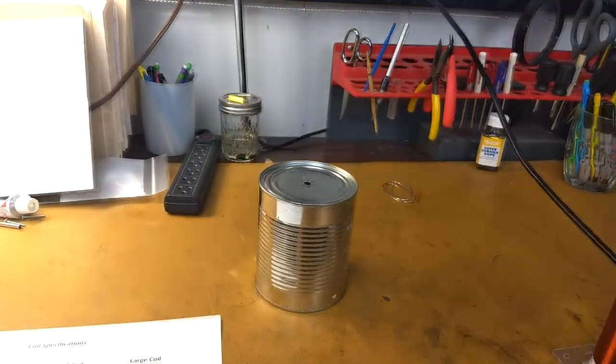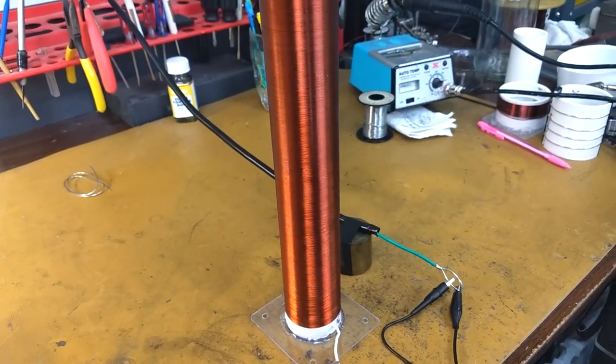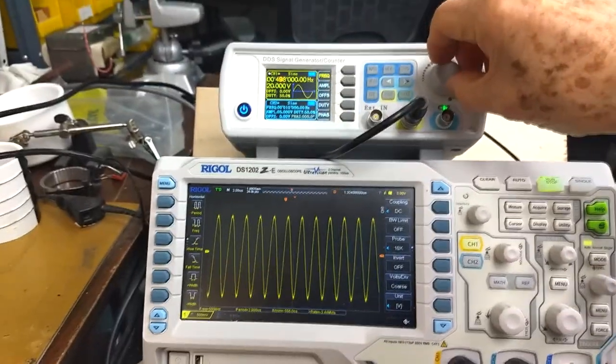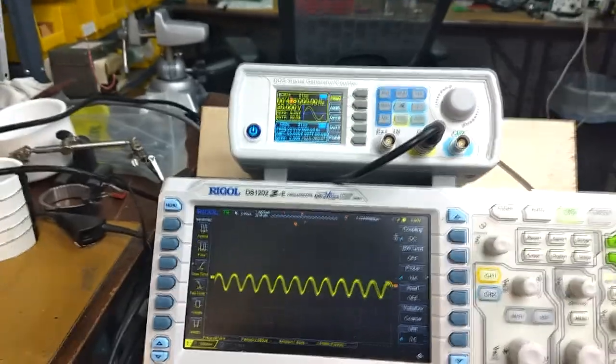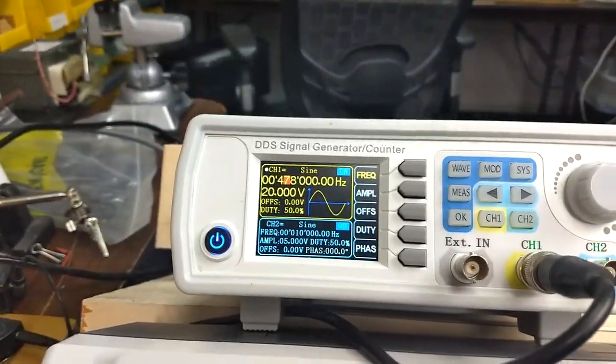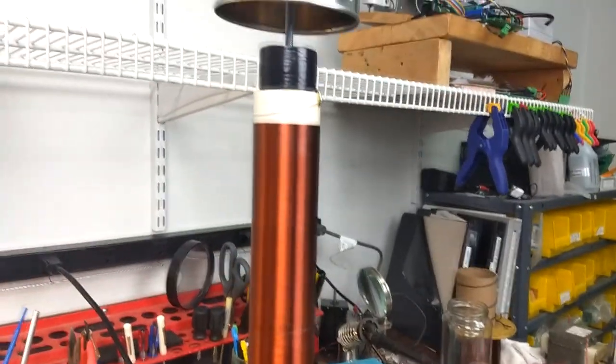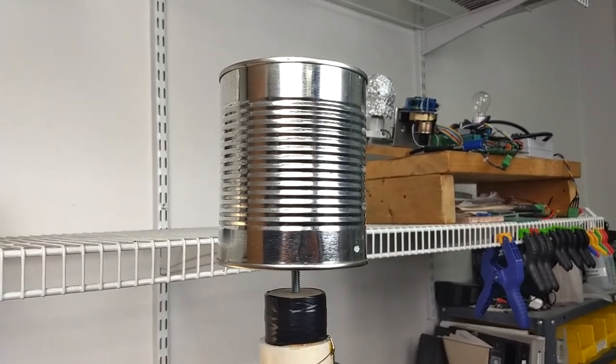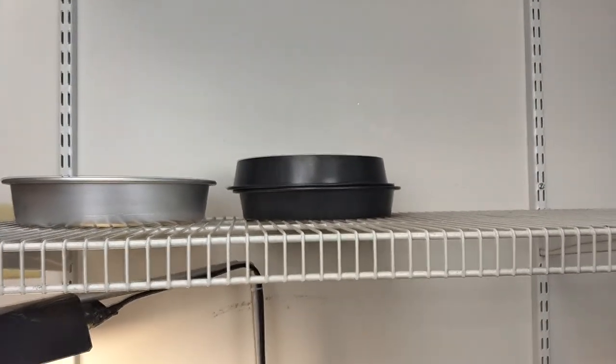Now I have a bigger can here. Let's put that on. Now we're about 478 kilohertz. So what you do to the top, the more surface area you put up here, the lower the frequency.